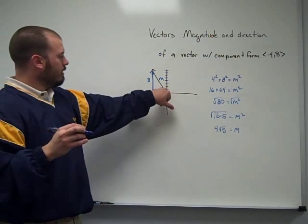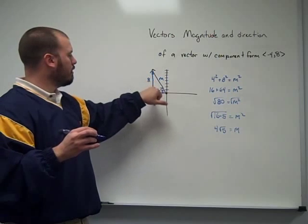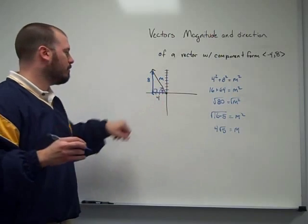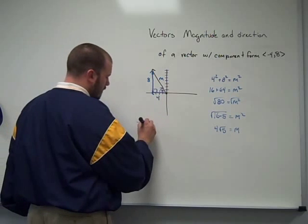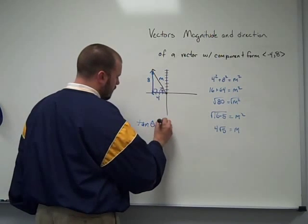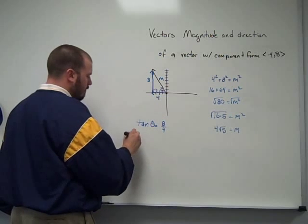I'm going to look at this angle and see what I know. 8 is opposite the angle that I'm looking for, 4 is adjacent to the angle that I'm looking for. Opposite and adjacent, that's tangent. So the tangent of theta is equal to 8 over 4, opposite over adjacent. I'm going to use inverse tangent.